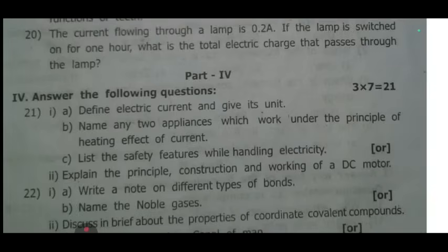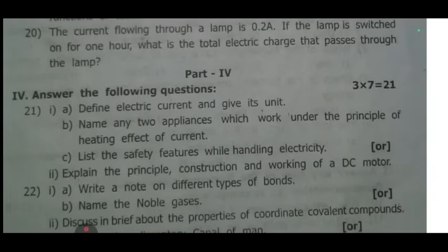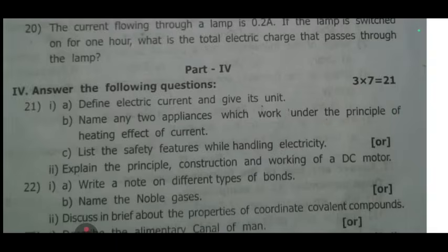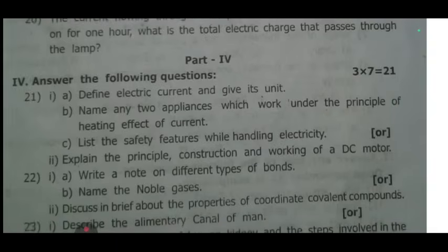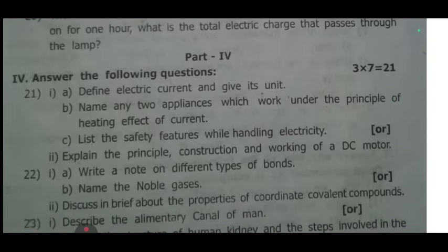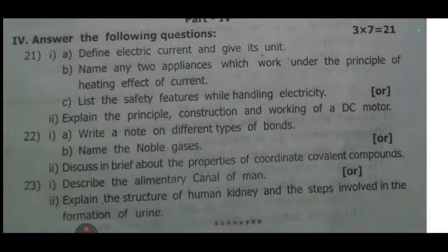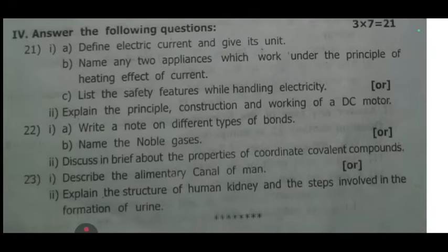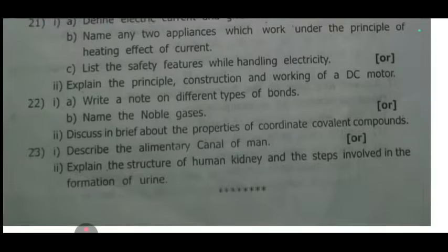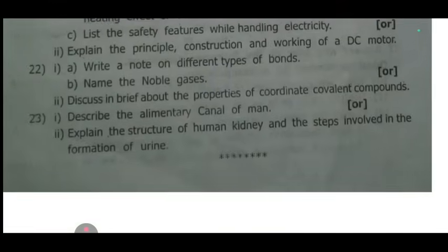Question 22: A: write a note on different types of bonds. B: name the noble gases. C: discuss briefly about the properties of coordinate covalent compounds. Question 23: describe the alimentary canal of man, or explain the structure of the human kidney and the steps involved in the formation of urine.